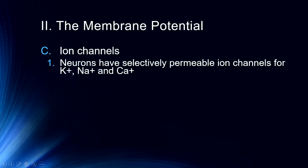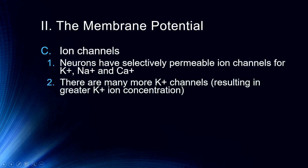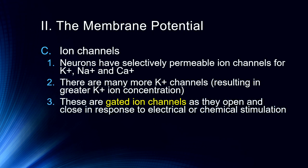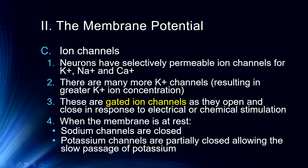Neurons have selectively permeable ion channels for potassium, sodium, and calcium. Calcium becomes more important at the terminal buttons, where voltage-gated calcium channels open and calcium ions cause vesicles to fuse with the cellular membrane, releasing neurotransmitters. For electrical signaling, we're mostly concerned with potassium and sodium ions, as well as chloride ions. There are many more potassium channels than sodium channels, resulting in greater potassium ion concentration. These are gated ion channels that open and close in response to electrical or chemical stimulation — primarily voltage-gated. When the membrane is at rest, sodium channels are closed and potassium channels are partially closed, though we get some leakage of potassium in and out.